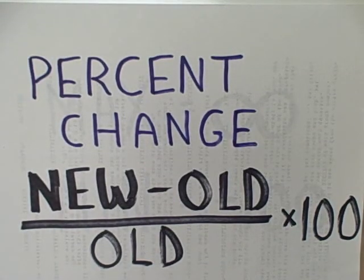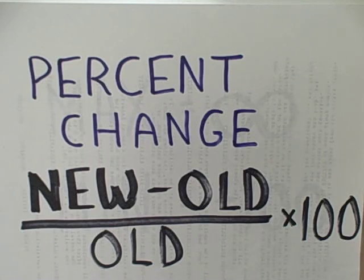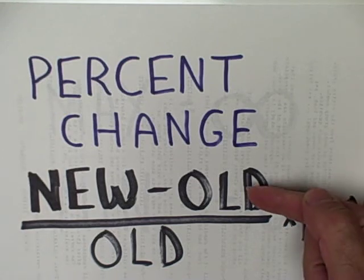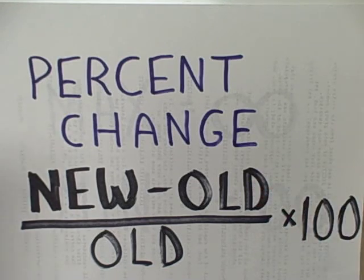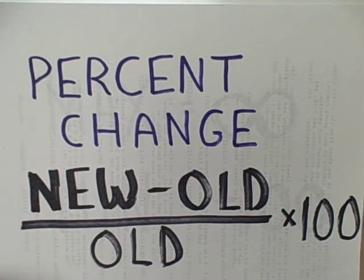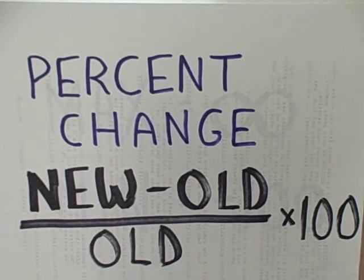Today we're going to talk about calculating percentage change. The formula is very straightforward. In dealing with any number of units to look at the percentage increase or decrease, we take the new amount, subtract the old amount, and then divide by that old amount as the base in the denominator. Then to get a percentage, we multiply by 100.